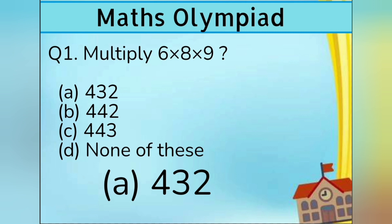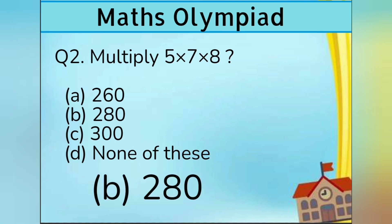Question number 2. Multiply 5 into 7 into 8. Option A 260, Option B 280, Option C 300, and Option D none of these. Answer is Option B 280.